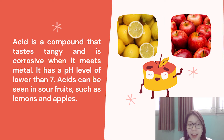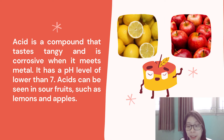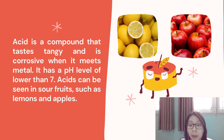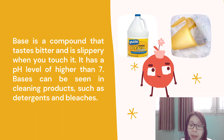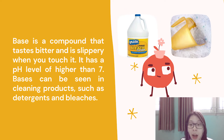What are acids and bases? Acid is a compound that tastes tangy and is corrosive when it meets metal. It has a pH level lower than 7. Acid can commonly be found in sour fruits such as lemons and apples. Base is a compound that tastes bitter and is slippery when you touch it. It has a pH level higher than 7, and can be found in cleaning products such as detergent and bleaches.